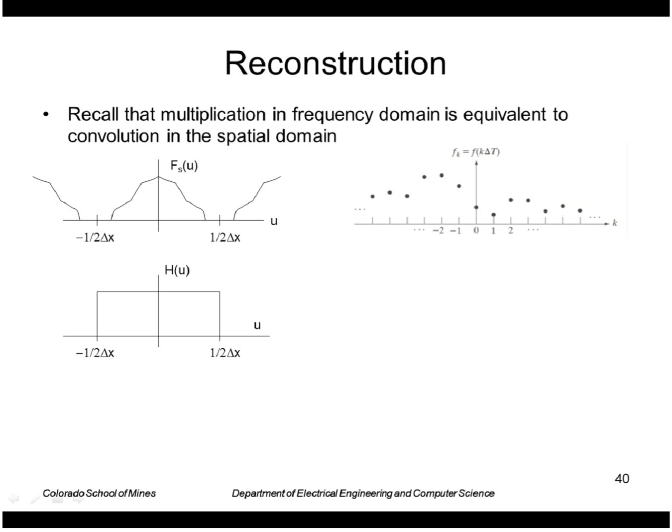Then we multiplied by the ideal low pass filter which its transform looks like that. Recall its Fourier pair is a sinc function in the spatial domain which looks like that.